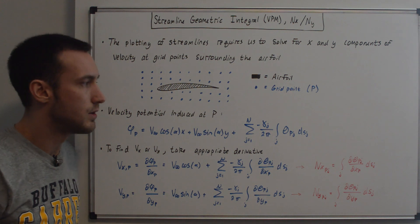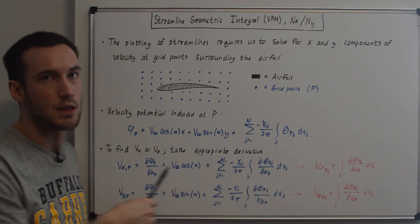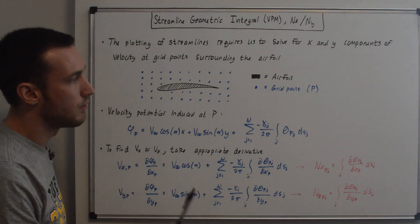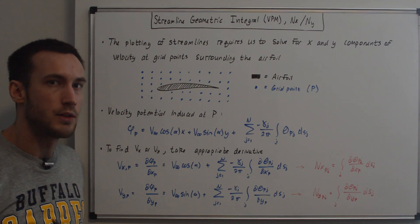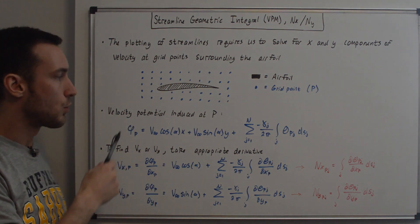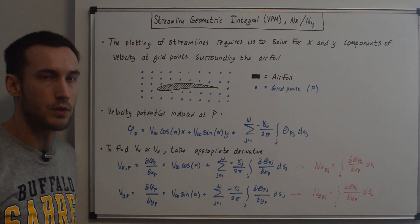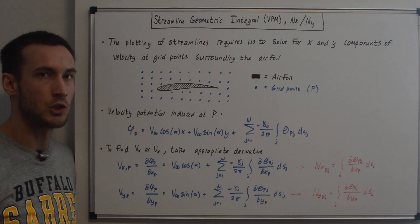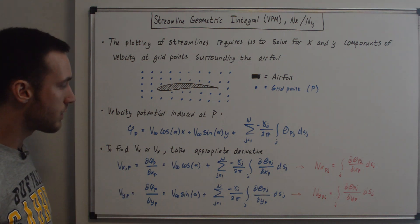Note that the gamma_j value here is the vortex strength per unit length and it's outside of the integral because we're assuming the vortex strength is constant on each panel but can vary from panel to panel. Similar to how we did the K_ij and L_ij derivations, to find the x or y velocity we're going to take the appropriate derivative — the x or y derivative respectively.